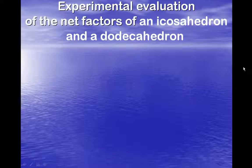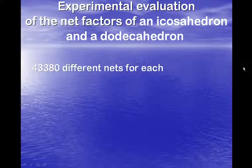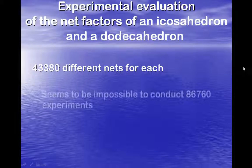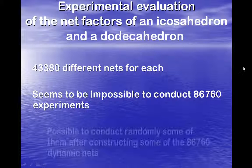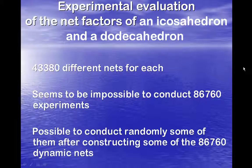After that, we have to do the work for a dodecahedron and an icosahedron. It will be really more difficult because we know that we have more than 40,000 different nets for each. It is very impractical to conduct nearly 90,000 experiments to evaluate all the net factors. What we can do is to construct some nets and, with the same process, evaluate experimentally their net factors.